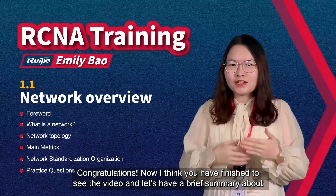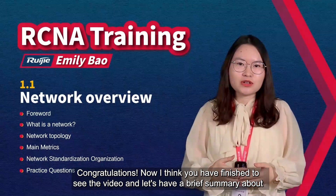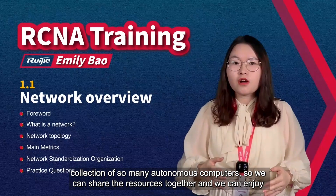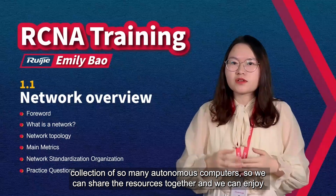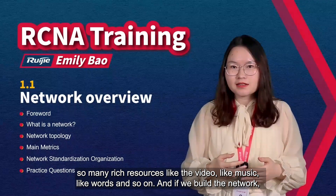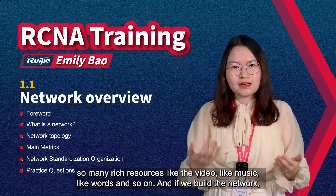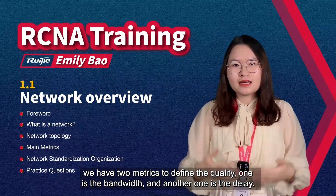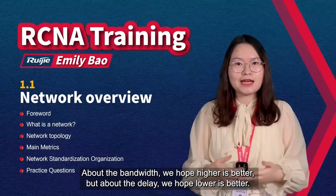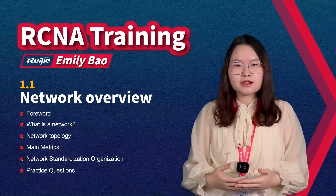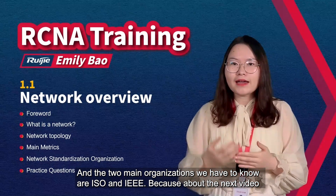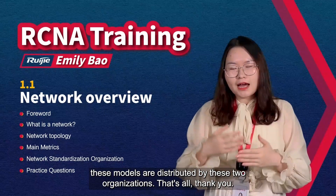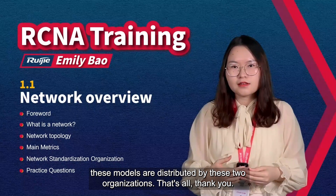Congratulations! Now I think you have finished watching the video. Let's have a brief summary. You already know what a network is — it is a collection of many autonomous computers so we can share resources together and enjoy rich resources like video, music, and more. If we build a network, we have two metrics to define quality: bandwidth and delay. About bandwidth, higher is better; about delay, lower is better. The two main organizations we need to know are ISO and IEEE, because in the next video we will explain the reference models distributed by these two organizations. That's all. Thank you.